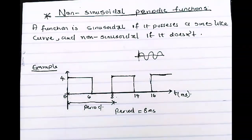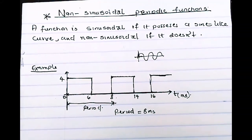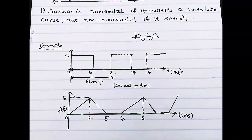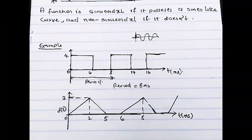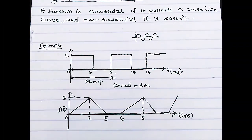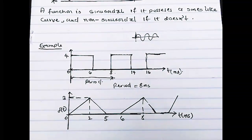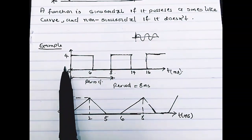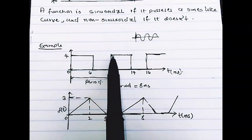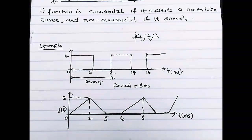Now let's take another non-sinusoidal periodic graph example. We missed something from our last example — we didn't actually find the amplitude. The amplitude is very easy to denote: it's the peak of your graph. From here to here, this is my amplitude, and it is constant throughout the graph. If I draw a straight line, it merges with four, so my amplitude A is four.